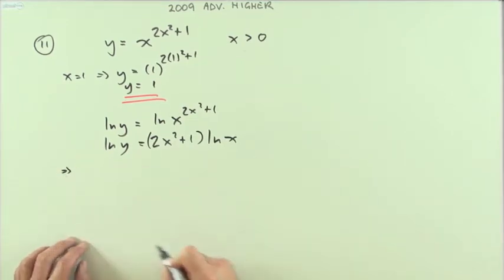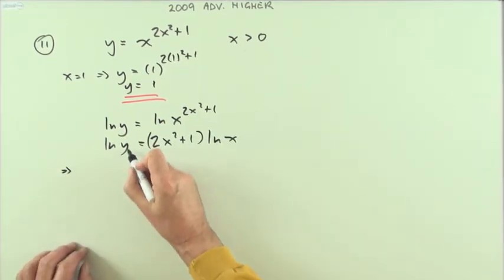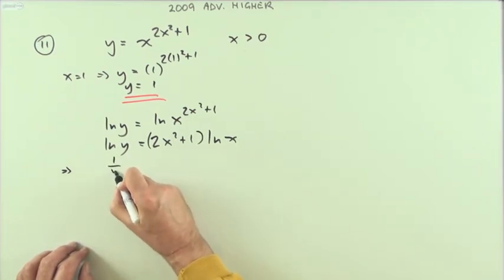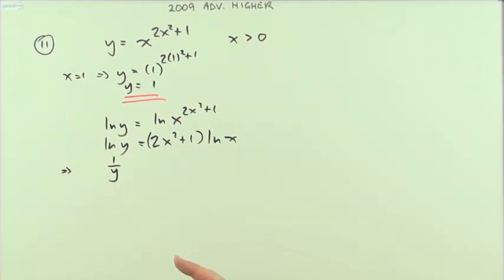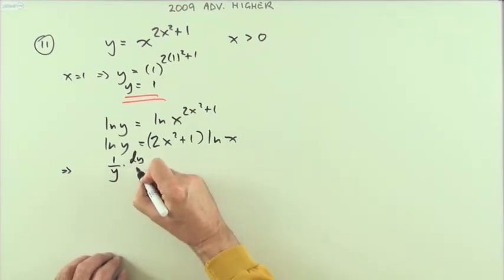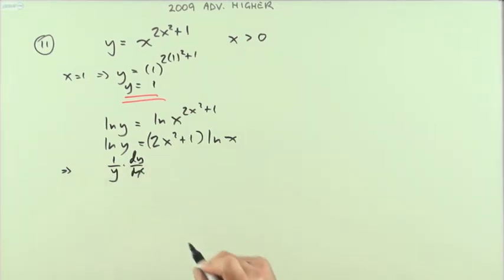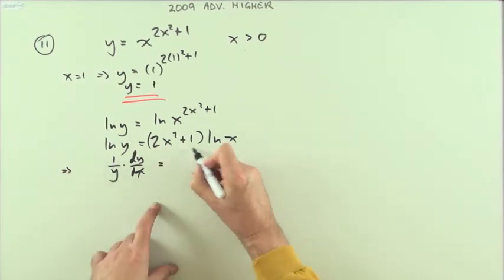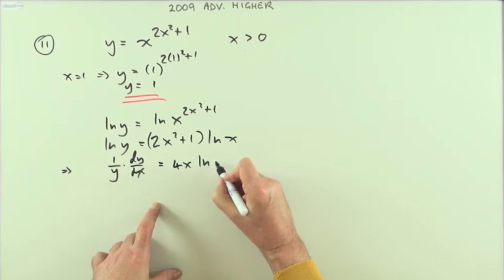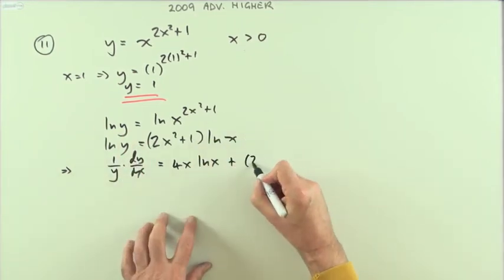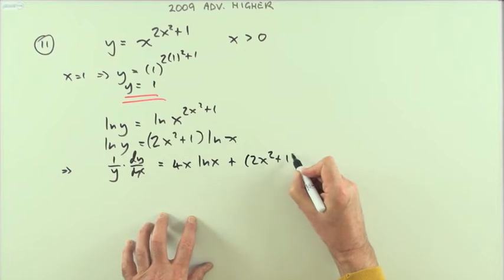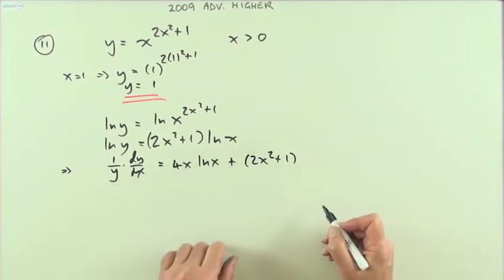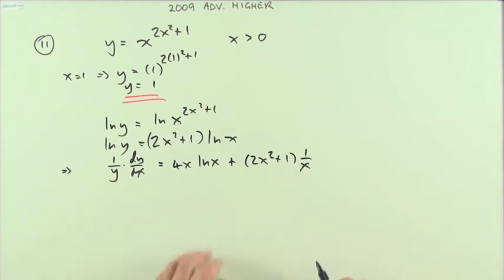Now differentiate it. ln of whatever it operates on produces 1 over whatever it operates on. If that thing itself is a function of x, I'll then have to multiply by the derivative of that with respect to x — and that was indeed the case with y, because y was quite clearly a function of x. Equals, and on this side I've got a product, so I'll be using the product rule. Differentiating the first term gives 4x, multiplied by ln x. Then leaving that one alone and differentiating ln x gives 1 over x.